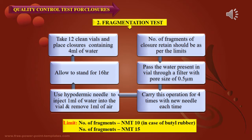For the fragmentation test, take 12 clean vials and place closures containing 4 ml of water, then allow to stand for 16 hours. Use a hypodermic needle to inject 1 ml of water into the vial and remove 1 ml of air; carry this operation 4 times with a new needle each time. Pass the water through a filter with pore size of 0.5 micrometers. Number of fragments retained should not be more than 10 for butyl rubber, and not more than 15 for other rubbers.